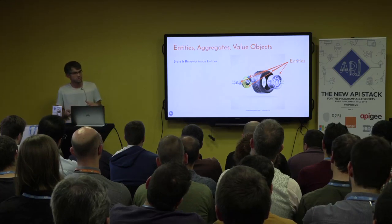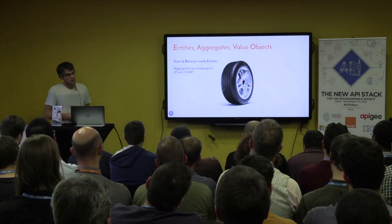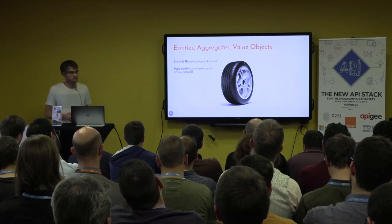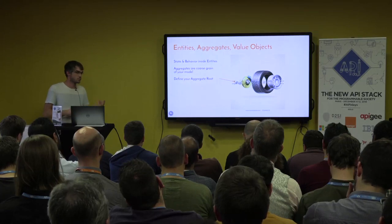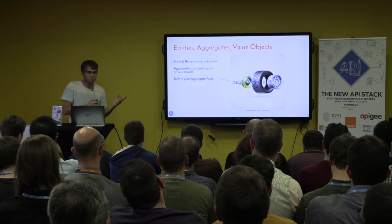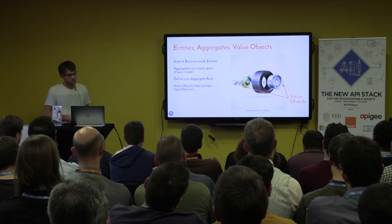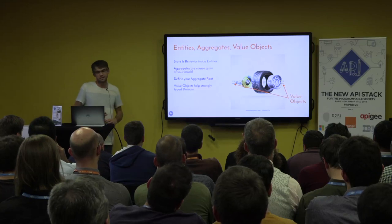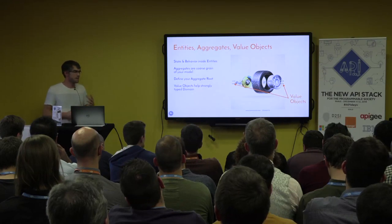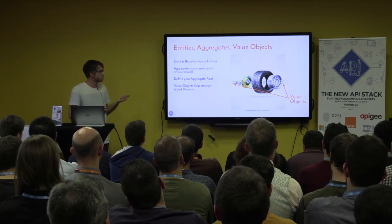Entities are grouped in aggregates — a container that holds several entities — and one entity is called the aggregate root. That's the only entity the outer world can interact with. What's really innovative in domain-driven design is the concept of value objects. These are disposable, immutable objects that help entities organize and validate their state. The screws might be the value objects in this wheel example.